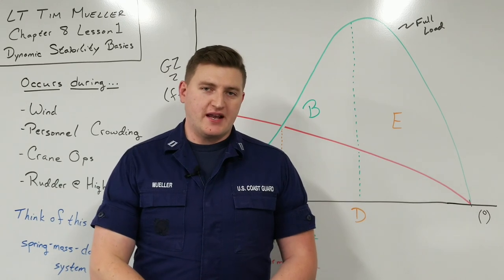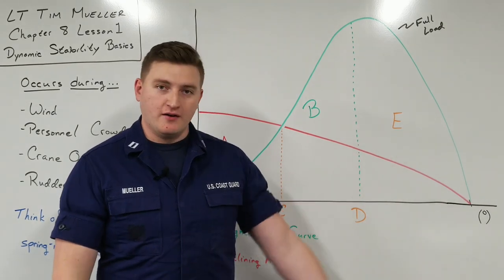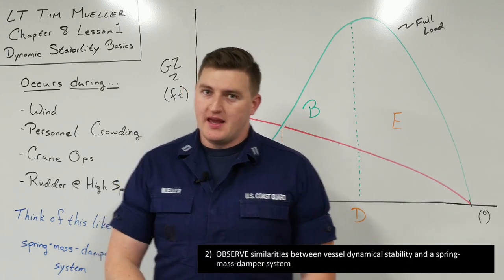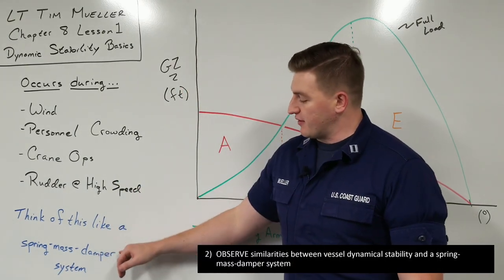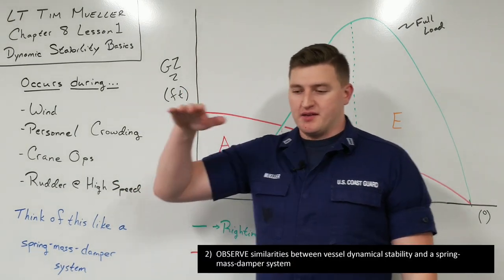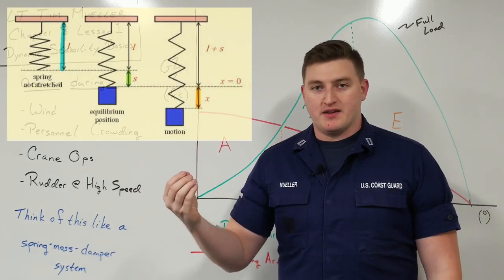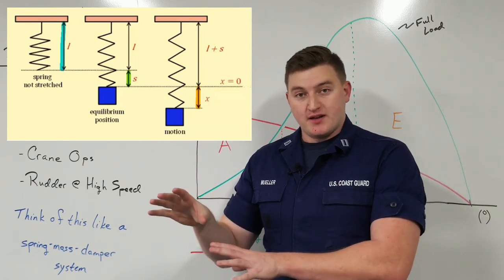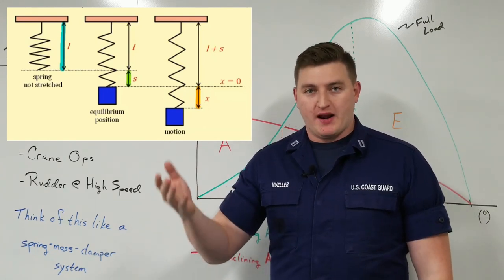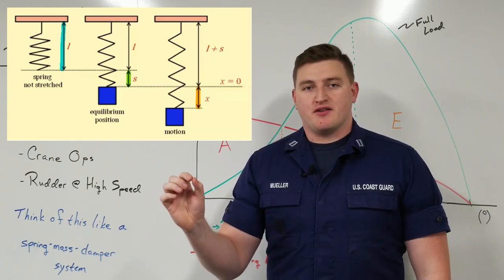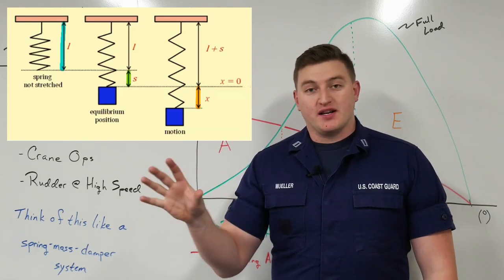Now, before talking about dynamic stability in a ship sense, which is this graph over here, I'm going to start talking about it with an analogous system. And that's going to be a spring mass damper system right here. So imagine you have a ceiling, just straight up right here, and then you have a spring that's being held by that ceiling. Now, if it's just the spring itself, then it's going to find this equilibrium point at some point. That little point where the end of the spring is, we're going to consider that to be our initial condition of our ship.